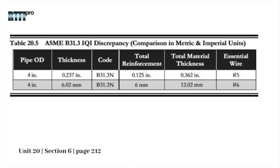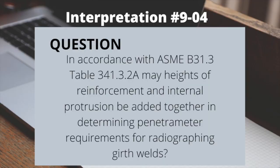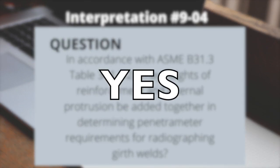When we choose a unit, it is required to choose either metric or imperial for the material thickness that we're using. When the material thickness unit is chosen, it is required to use the reinforcement for that specific unit. When choosing between inches or millimeters, you must follow the code to that unit chosen. This can be verified through Interpretation 9-04. In accordance with ASME B31-3 Table 341.3.2a, may heights of reinforcement and internal protrusion be added together in determining radiographic requirements for girth welds? The reply was yes.